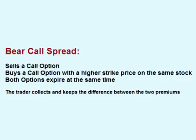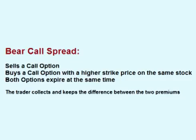The option the trader sells has a lower strike price and therefore a higher cost, and the option the trader buys has a higher strike price and therefore a lower cost. Because the trader is selling a call option with a lower strike price than the call option he buys, the premium the trader collects up front for the option he sells will always be higher than the cost he pays for the option that he buys.